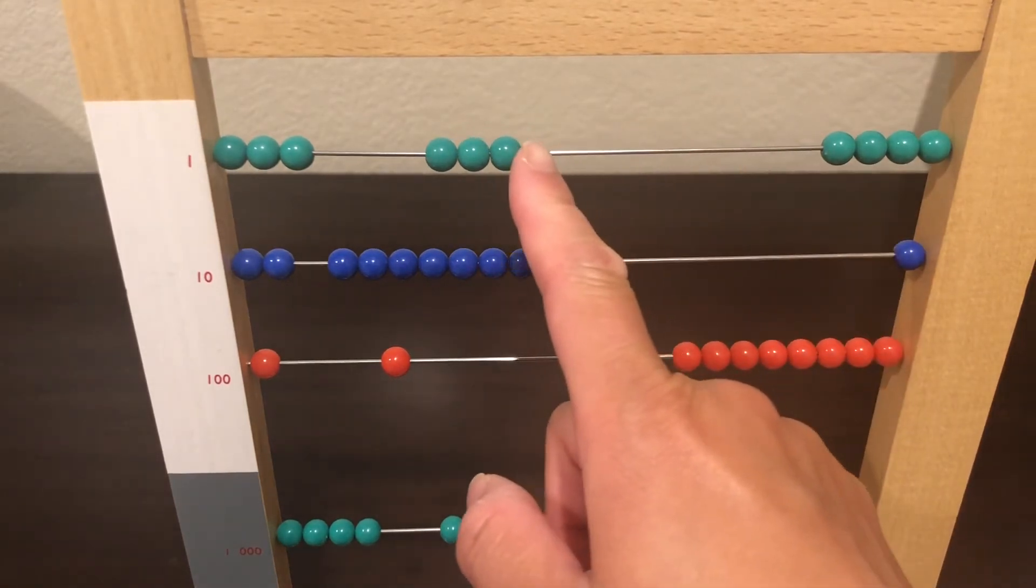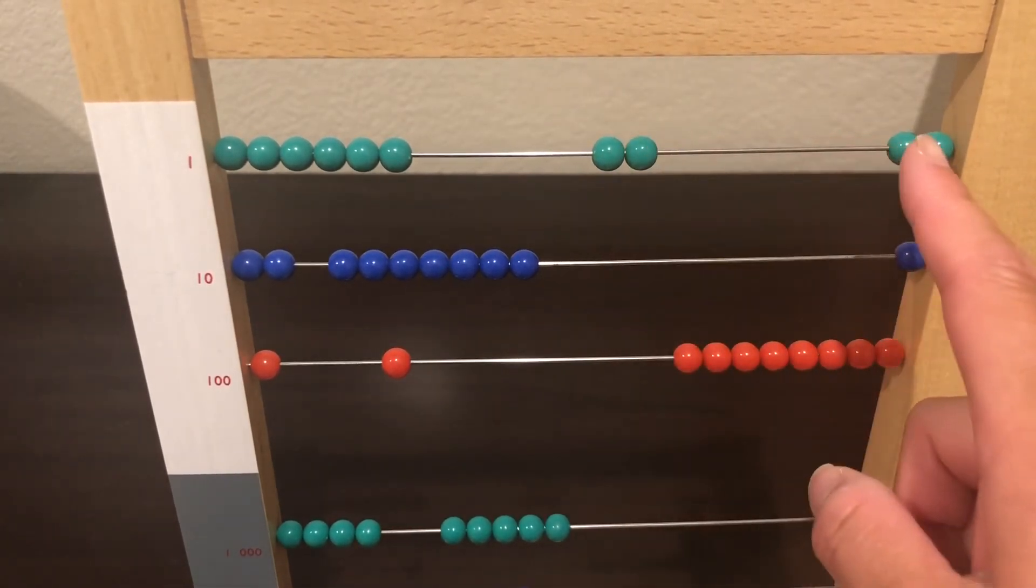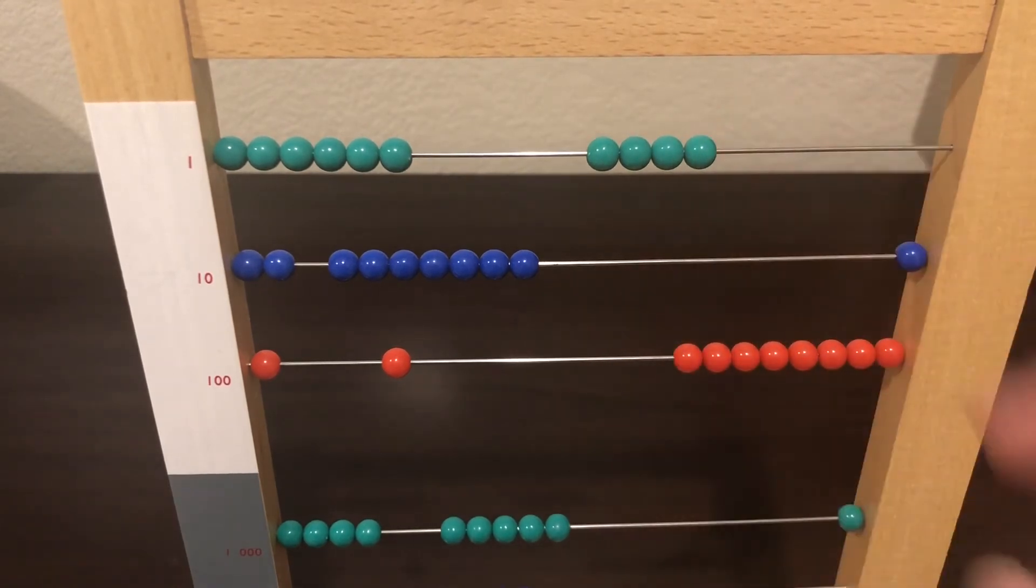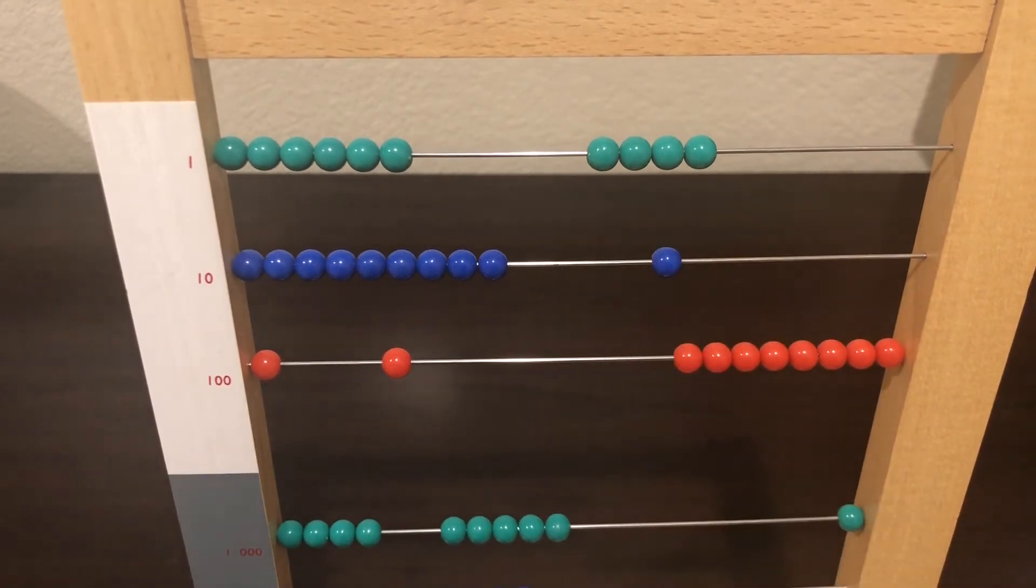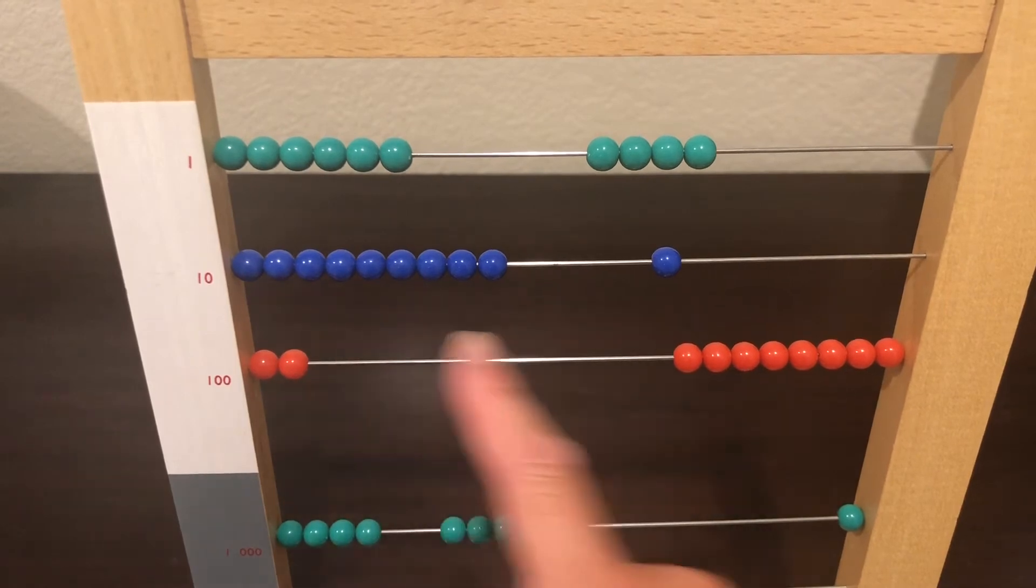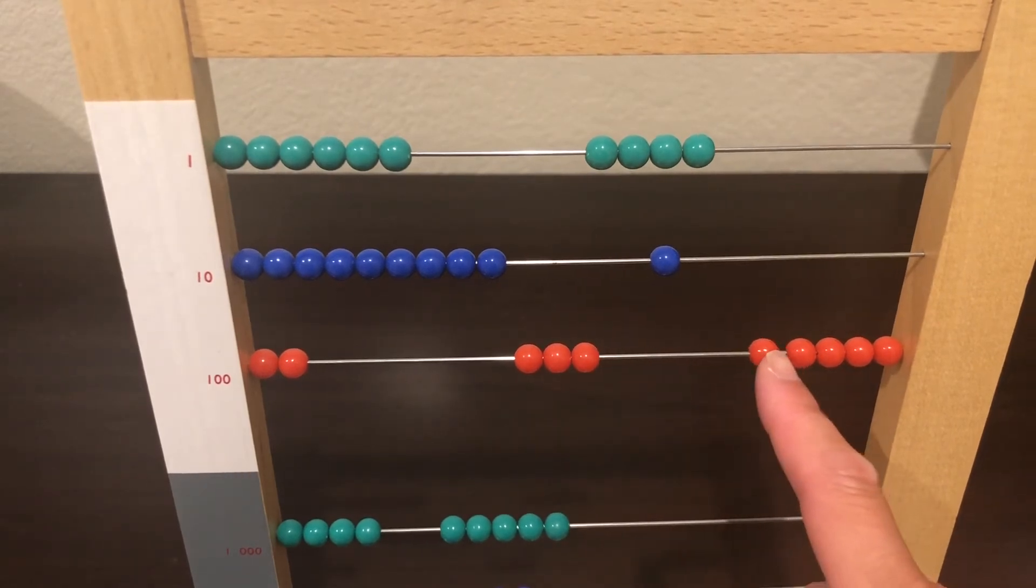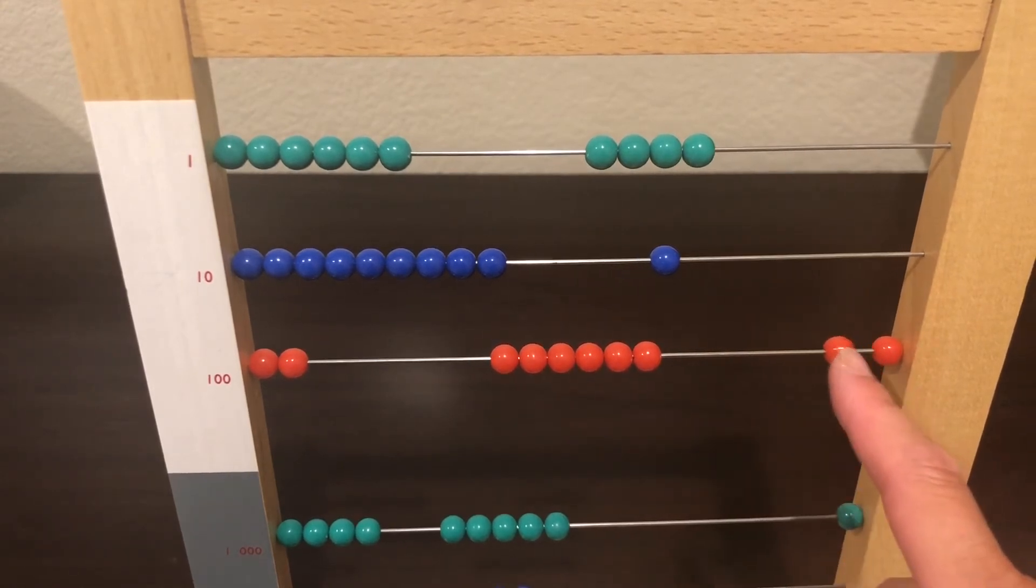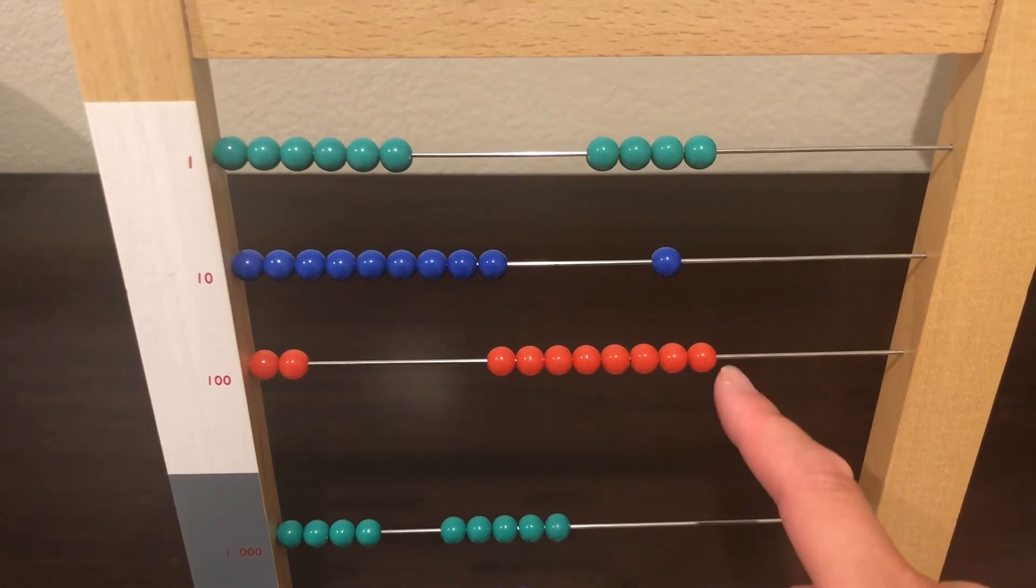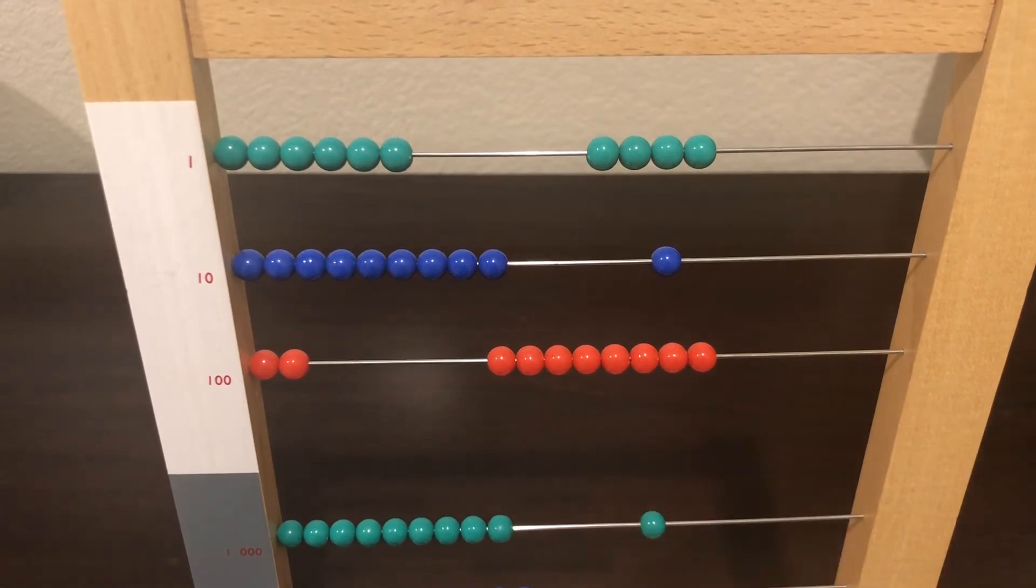We have 1, 2, 3, 4 - 4 units left. And we have 1 ten left. We have 100, 200, 300, 400, 500, 600, 700, 800 left. 1,000.